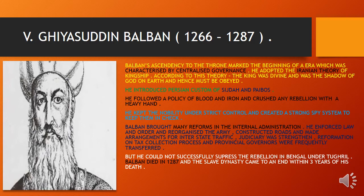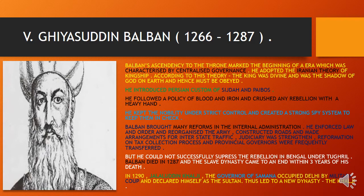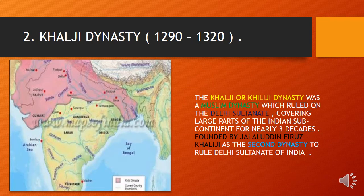In 1290, Jalaluddin Khalji, the governor of Samana, occupied Delhi by military force and declared himself Sultan, founding a new dynasty — the Khalji dynasty. The Khalji dynasty was a Muslim dynasty that ruled the Delhi Sultanate, covering large parts of the Indian subcontinent for nearly three decades, founded by Jalaluddin Firuz Khalji as the second dynasty to rule the Delhi Sultanate.